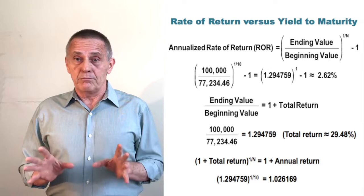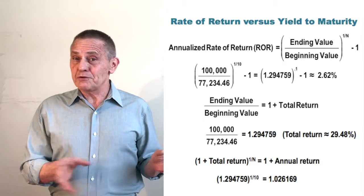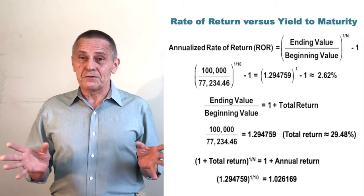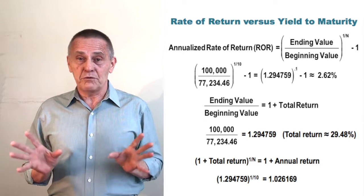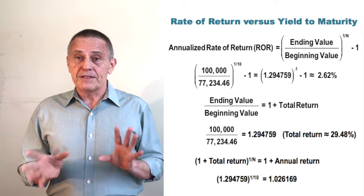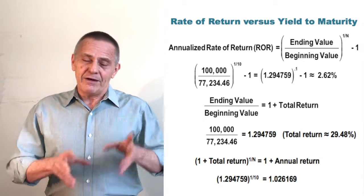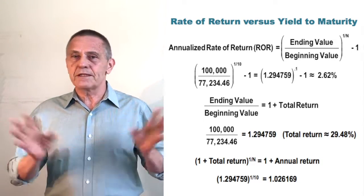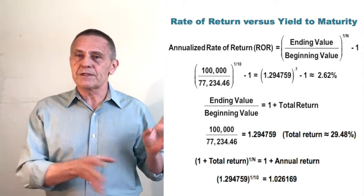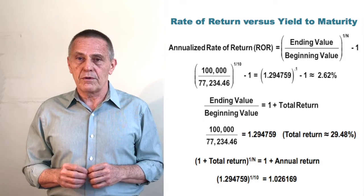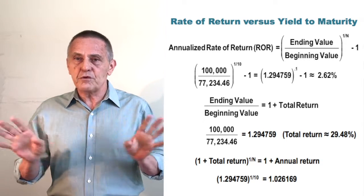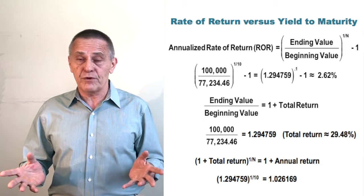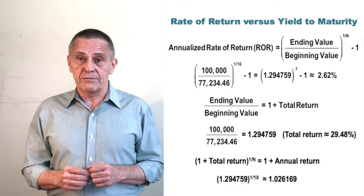One might recognize 2.62% as the effective yield or effective annual rate. Some people would say it's just the difference in compounding frequency and is easily adjusted for — treating 2.60% adjusted for compounding frequency as the rate of return. You could do that for a zero-coupon bond, but remember most bonds are not zero-coupon bonds.